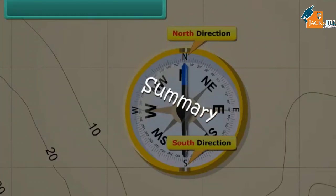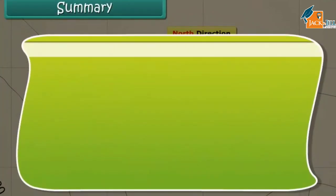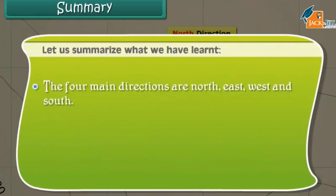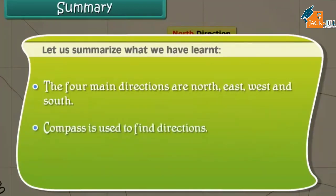Summary: the four main directions are North, East, West, and South. A compass is used to find directions.